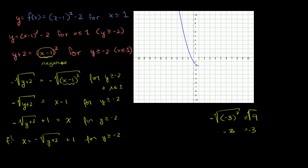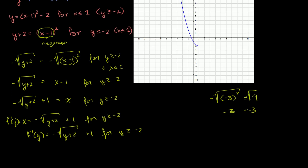Now if we want to write this in function notation, we just rename y as x. So f⁻¹(x) = -√(x + 2) + 1, for x ≥ -2.